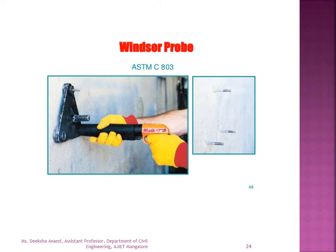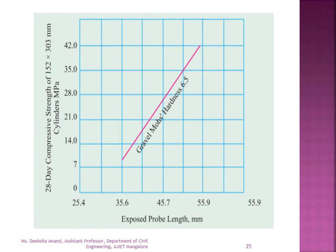The principle of the Windsor probe is similar to that of the rebound hammer — the penetration of the probe reflects the compressive strength in the area of concern. A graph is provided between penetration length and compressive strength, from which compressive strength can be known. The tool standard is ASTM C803. The exposed probe length is like the length of a needle, and the graph shows a drastic increase at hardness 6.5.